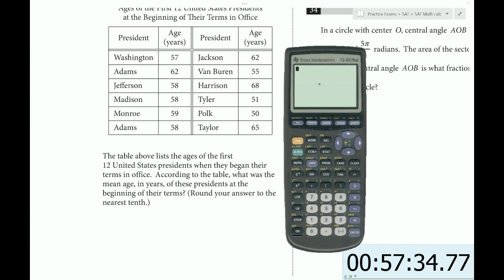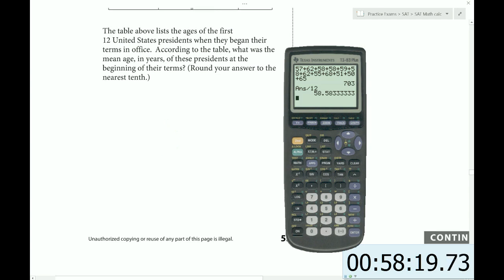We could do it longhand or use the built-in list function. For simplicity, I'm just going to add them all up manually: 57 plus 62 plus 58 plus 58 plus 59 plus 58 plus 62 plus 55 plus 68 plus 51 plus 50 plus 65. Then divide by 12. We get 58.58, so that's 58.6 rounding to the nearest tenth.